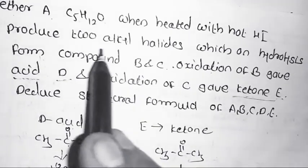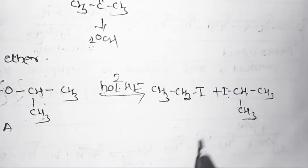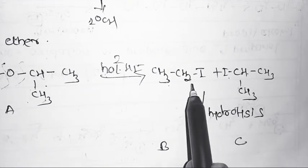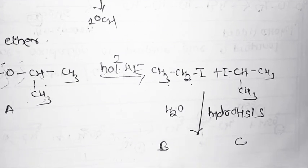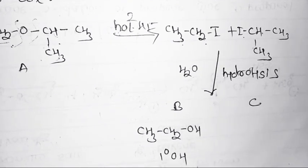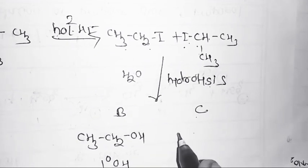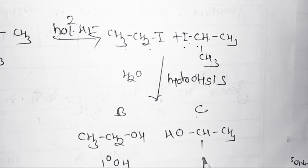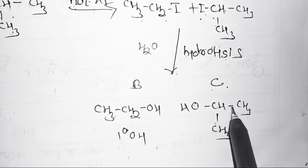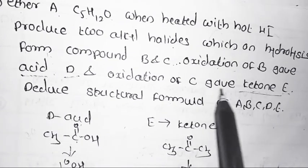These alkyl halides undergo hydrolysis to form compounds B and C. Ethyl iodide on hydrolysis gives ethyl alcohol (primary alcohol) — this is compound B. Isopropyl iodide on hydrolysis gives isopropyl alcohol (secondary alcohol), with structure CH3-CH(OH)-CH3 — this is compound C.